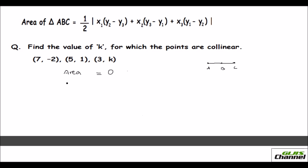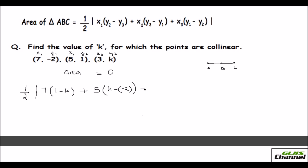Area equals zero. Now let me apply the area formula. It is half times the absolute value of: x1 is 7, times (y2 - y3) which is (1 - k); plus x2 which is 5, times (y3 - y1) that is (k - (-2)); plus x3 which is 3, times (y1 - y2) which is (-2 - 1). Close the absolute value and set this equal to zero.